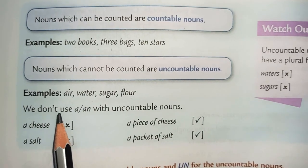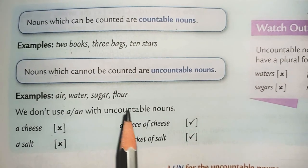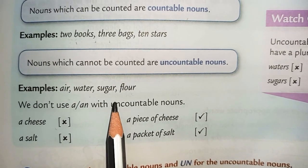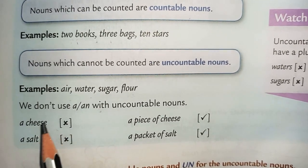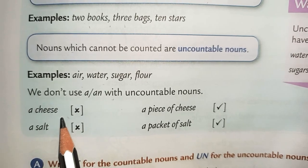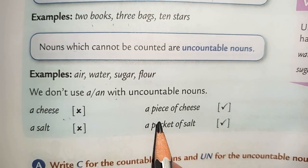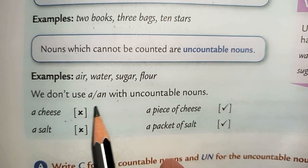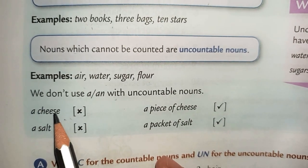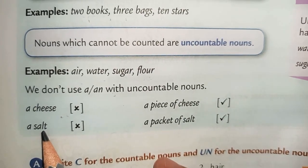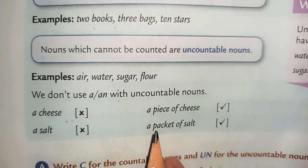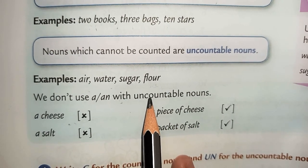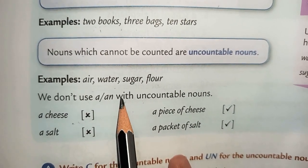Now there are some rules also. We do not use 'a' or 'an' with an uncountable noun. For example, if we take any uncountable noun — something that cannot be counted — we will not use 'a' or 'an' with it. Like 'a cheese' is wrong. But if we write 'a piece of cheese,' then it is absolutely correct. Similarly, 'a salt' is wrong, but 'a packet of salt' is absolutely correct. So the rule is: if a noun is uncountable, we will not use 'a' or 'an' before it.